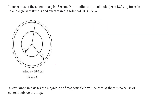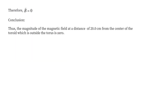Now, for the magnetic field at a distance of 20 cm, which is outside the outer radius, the magnetic field will be 0. There is no net current enclosed outside the toroid loop, so there is no effect of magnetic field at that point. Therefore, the magnetic field at 20 cm is 0.